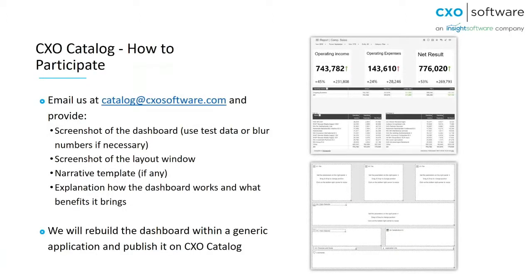How can you participate? We have a special email address: catalog@CXOsoftware.com. The email goes to me and Marcel — it's a way for us to receive emails and distribute them to colleagues. What we'd like from you to start working with your report: first, we need to know how your report looks. If it has sensitive data, feel free to blur the data or use a test application. We recommend not sending production numbers, but even if you do, we'll treat it with complete confidentiality — we will always rebuild the report on a demo application and take a screenshot of the rebuilt version to put in CXO Catalog.